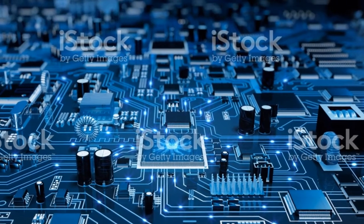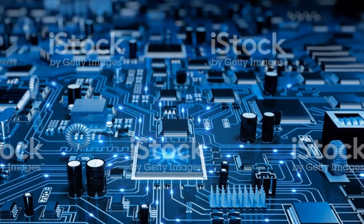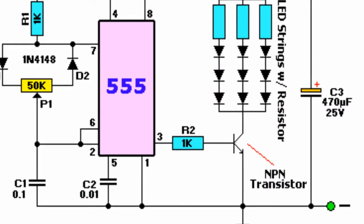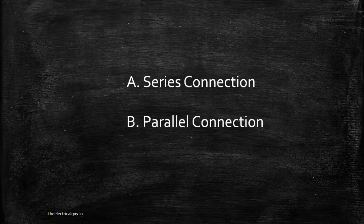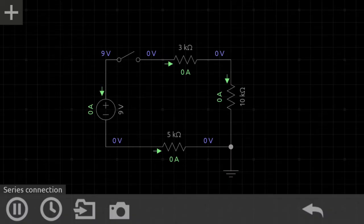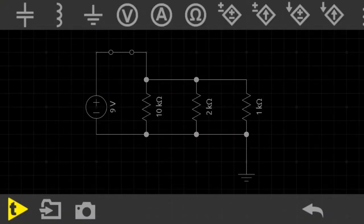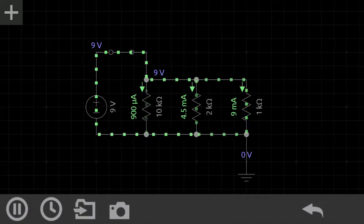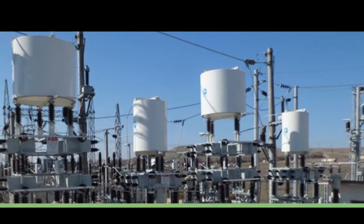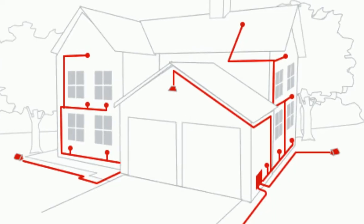A circuit consisting of two or more components is common. These components in the circuit can be connected in two different ways — series or parallel. The questions are: what is series connection, what is parallel connection, how is voltage and current in case of series or parallel connection, and what are the real-life applications of series and parallel connection?